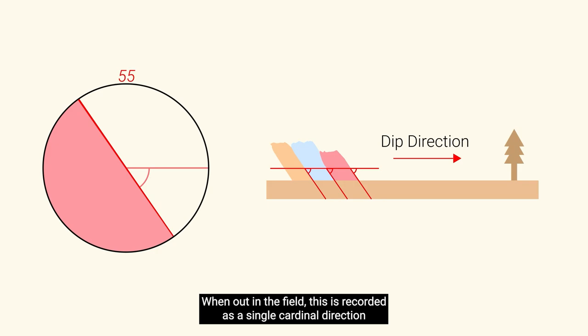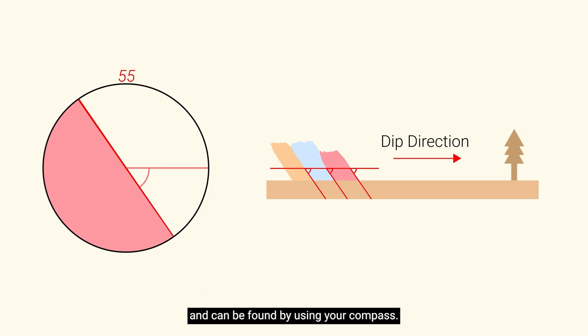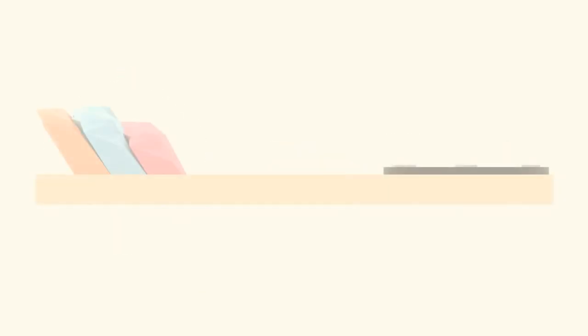Now that we know all of the essentials of dip, it is time to move on to strike. The first thing that should be noted here is that strike will always be perpendicular to a bedding's dip.